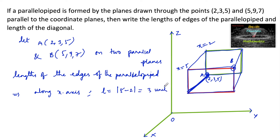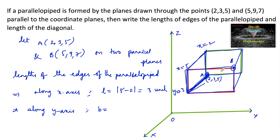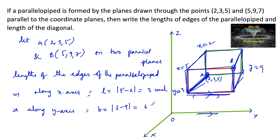Along the y-axis, the breadth b: we consider the plane through point A whose y-coordinate is 3, and the plane through point B whose y-coordinate is 9. The difference along the y-axis is |9 − 3| = 6 units.